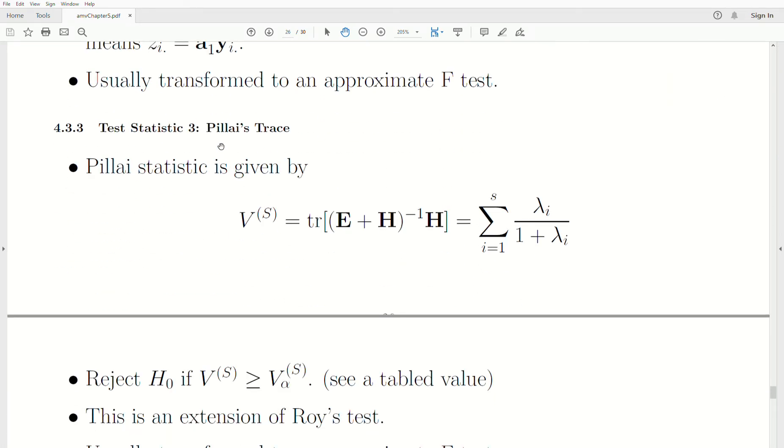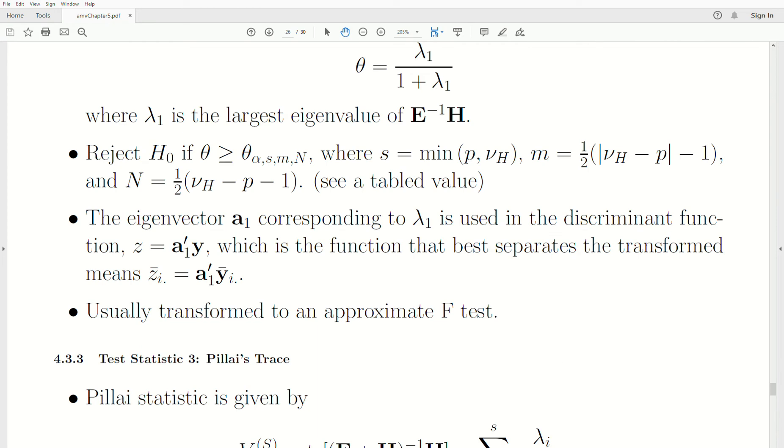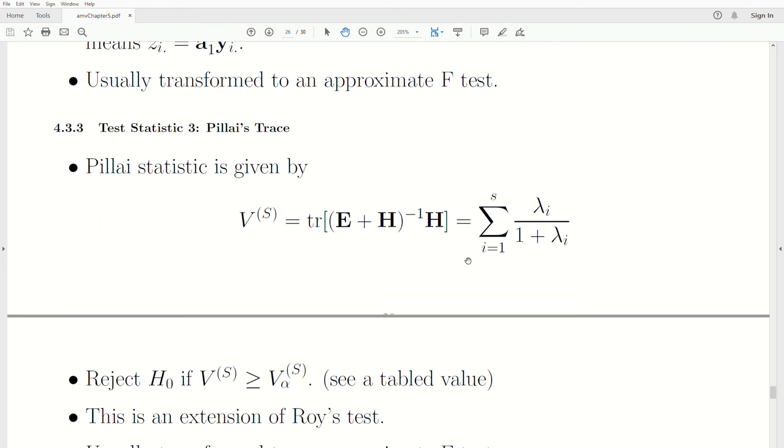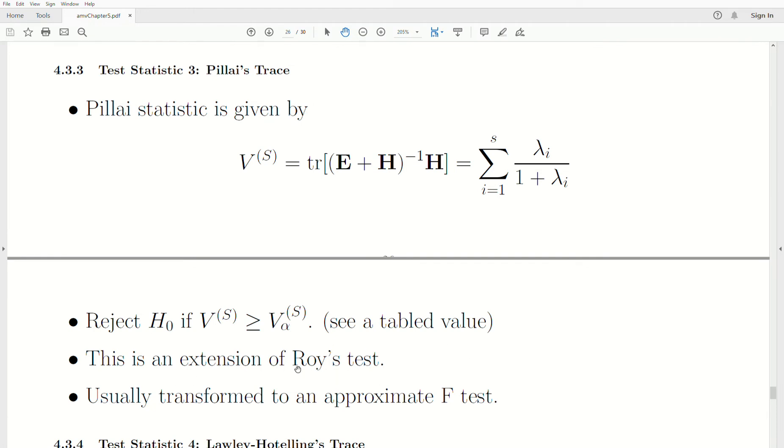Now, the third test we're going to look at is Pillai's, and I apologize if I'm butchering that name, Pillai's trace. It's given by this. It's the sum of this. Now, notice that these Lambda values are eigenvalues, and here in Roy's root, we use just Lambda 1. In this test statistic, we use the sum of all of them of that function. It ends up being the trace of this matrix here. And so that's Roy's test. And if V is too large, then we reject. And this is really an extension of Roy's test.